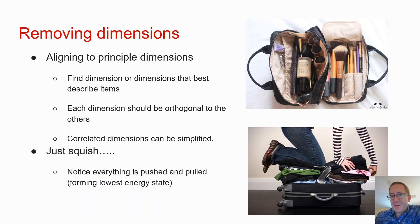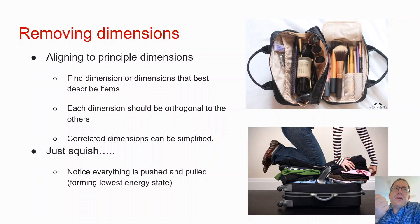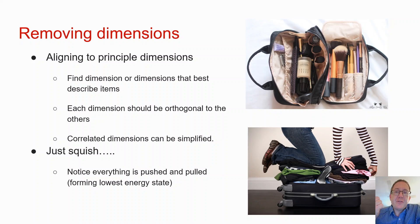You're looking for the best bang-for-your-buck dimension to describe your data, then the next one that is not related to the first. Any dimensions that are correlated automatically get simplified. For example, the rate of diabetes is correlated with socioeconomic status — if you make less money, your rate of diabetes actually increases. So you could represent either socioeconomic status or rate of diabetes; both dimensions would be represented as one, or you can combine the two together.